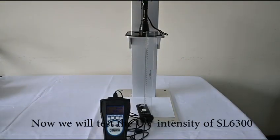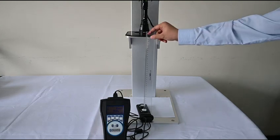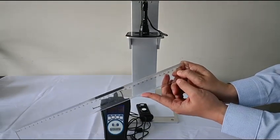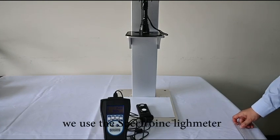Now we will test the UV intensity of SL6300. Our test distance is 15 inches away. And to ensure the security we use the spectrometer at 9 meters.